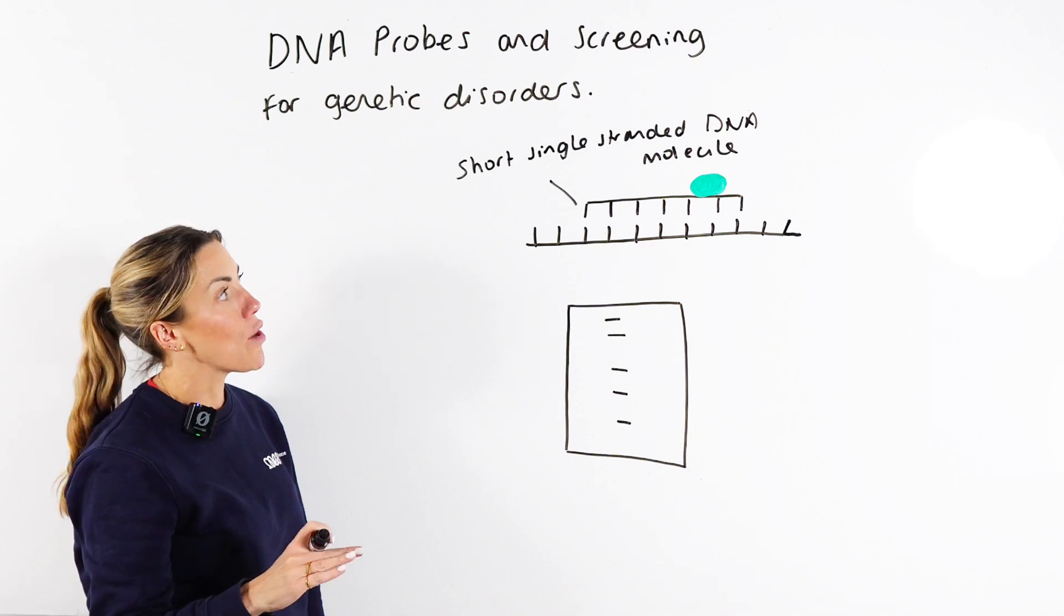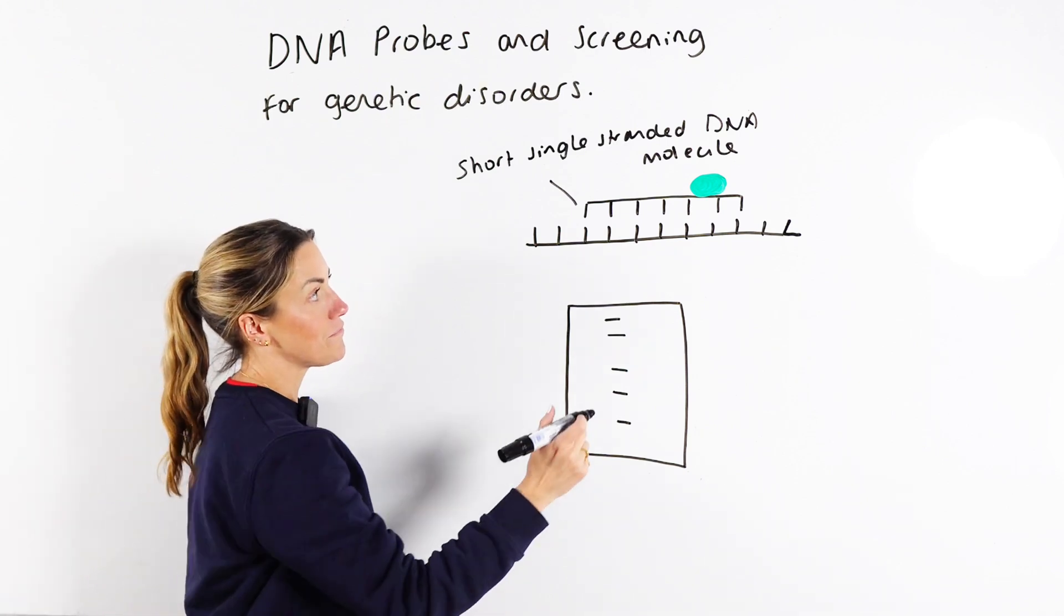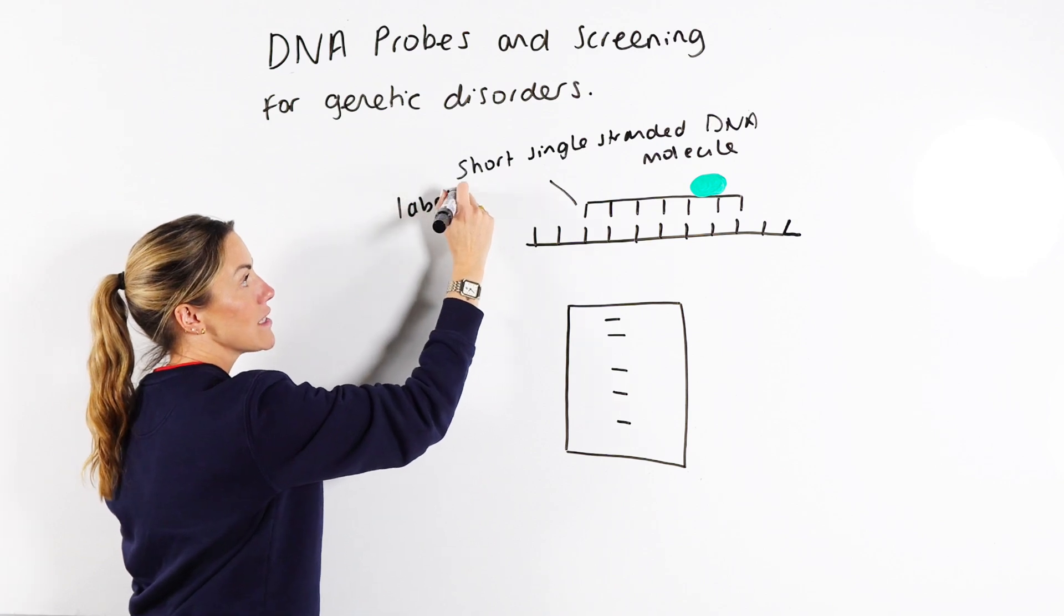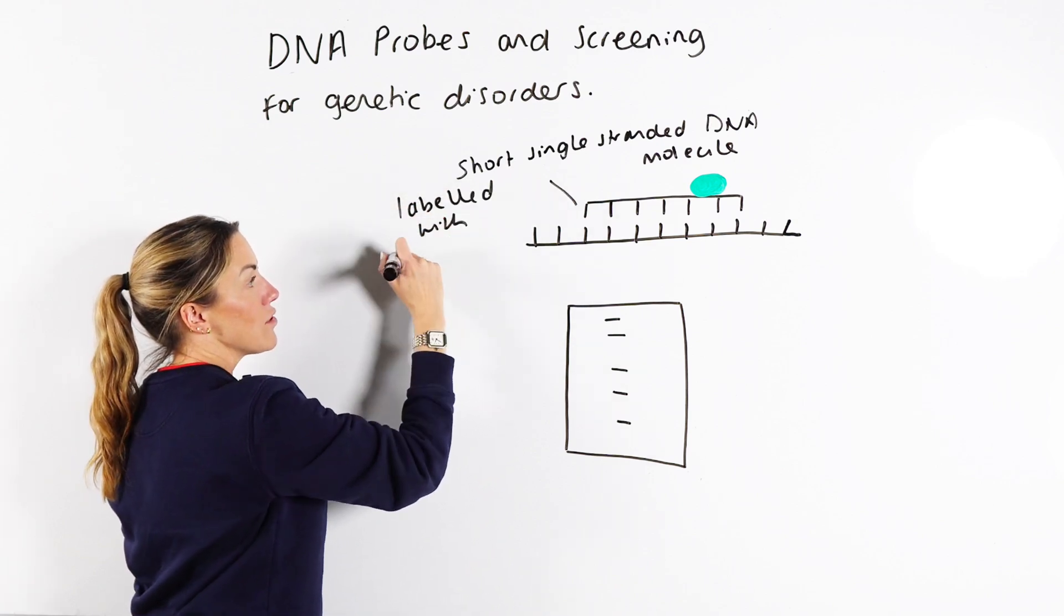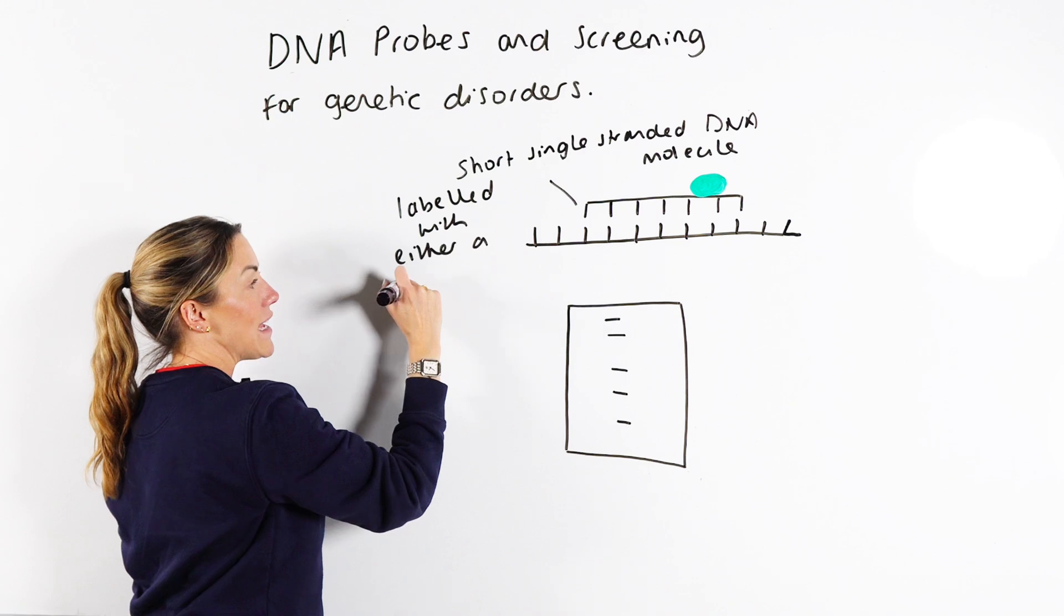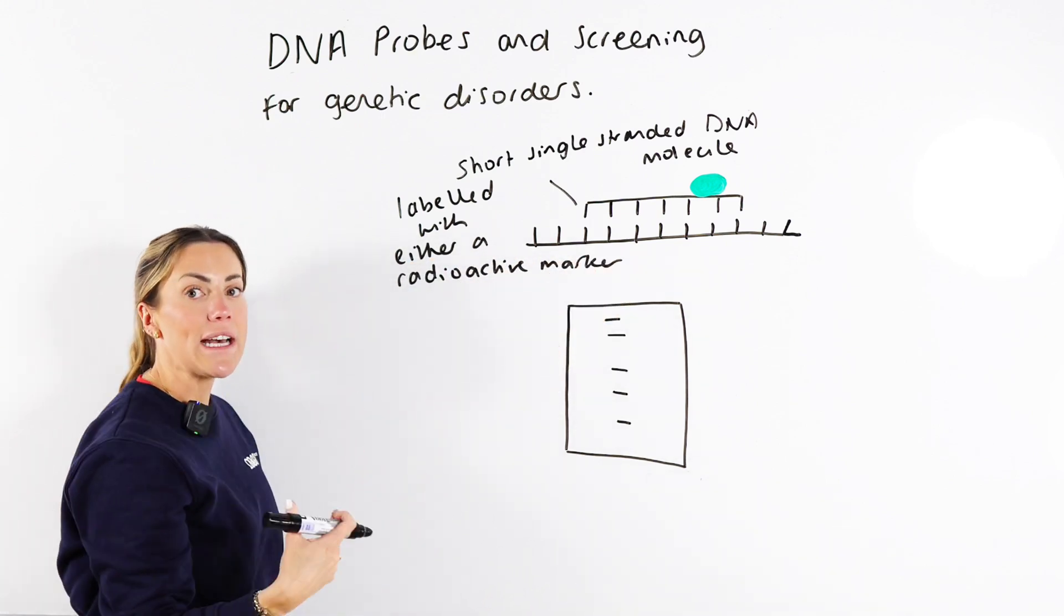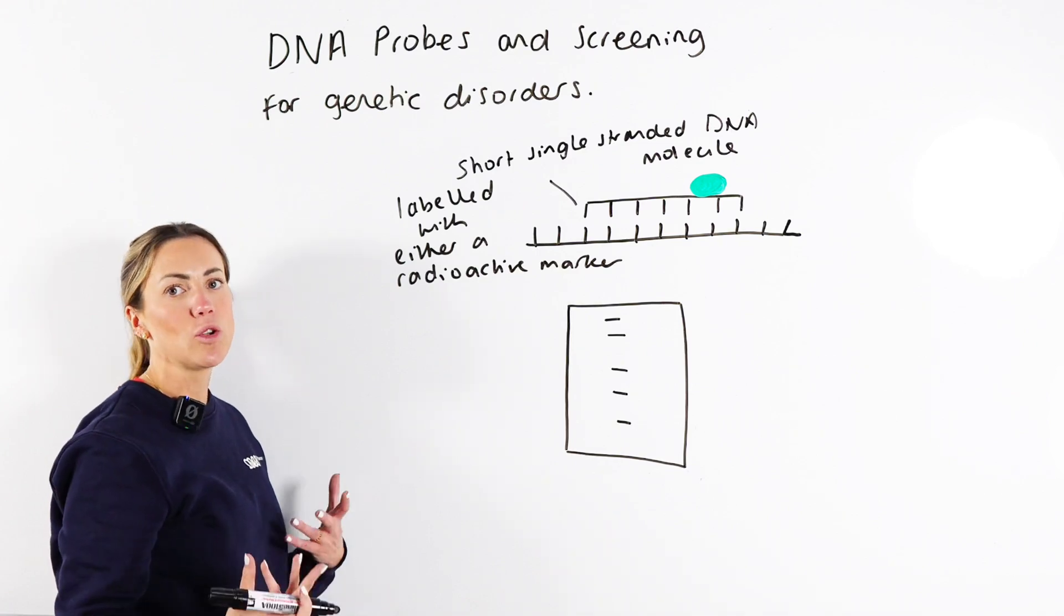The other thing we should know about a gene probe is it's labelled. So it's labelled with you could say either a radioactive marker which you can later visualize using x-ray film in a technique called autoradiography.